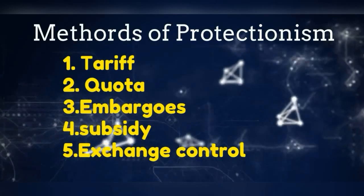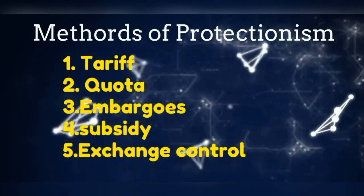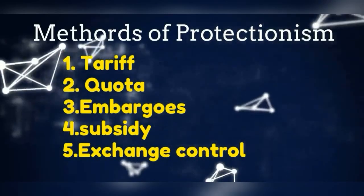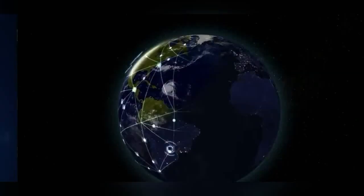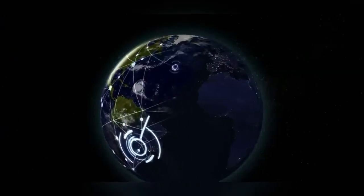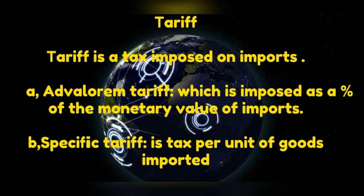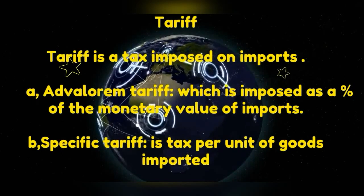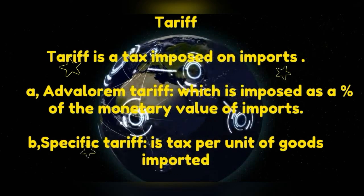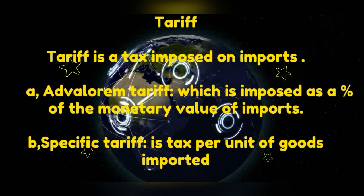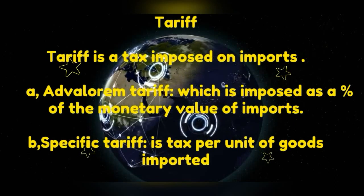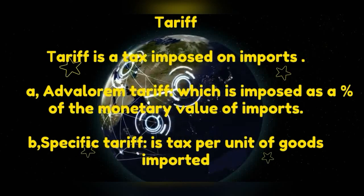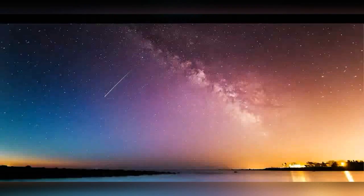The five main protectionist measures are: tariff, quota, embargo, subsidy, and exchange rate control. Tariff refers to the tax on imports. There are two types: ad valorem tax, which is imposed as a percentage of the monetary value of the import, and specific tariff, which refers to a fixed tax per unit of goods imported.